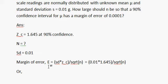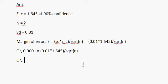So 0.001 equals to 0.01 times 1.645 divided by square root of n. Rearranging: square root of n equals 0.01 times 1.645 divided by 0.001. Then squaring both sides: